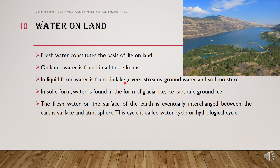On land, water is found in all three forms: solid, liquid, and gaseous. In liquid form we have rivers, lakes, streams, groundwater, and soil moisture. In solid form we have glacial ice, ice caps, and ground ice. Water on the Earth's surface evaporates into the atmosphere and then precipitates back to the Earth's surface. This interchange is what we call the water cycle or hydrological cycle.